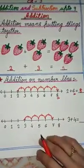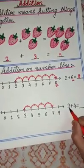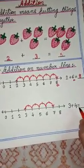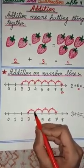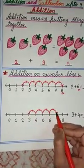Let's do one more question to understand it better. Here we have question 3 plus 4. So we will start from 3 and take 4 steps forward.